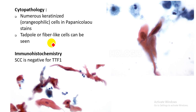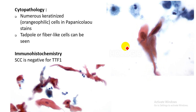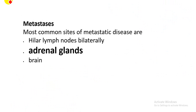Talking about the cytopathology of squamous cell carcinoma of the lung: after Papanicolaou staining of the sputum or fine needle aspiration cytology, you can see numerous keratinized orangeophilic cells. These malignant orangeophilic cells appear in the form of a tadpole shape, and therefore they are also known as tadpole cells or fiber-like cells. To differentiate these cells from adenocarcinoma cells, we can do immunohistochemical staining for thyroid transcription factor-1 (TTF-1). Squamous cell carcinoma is negative for TTF-1, but adenocarcinoma is positive for TTF-1.